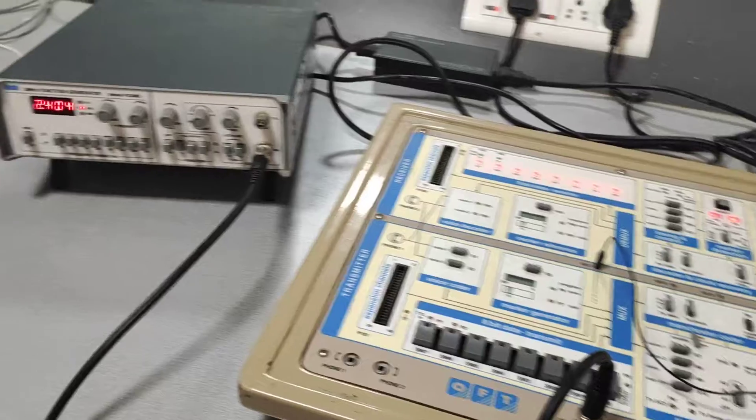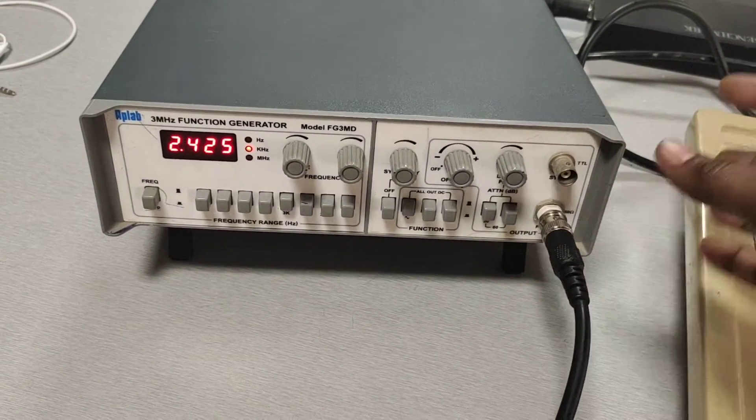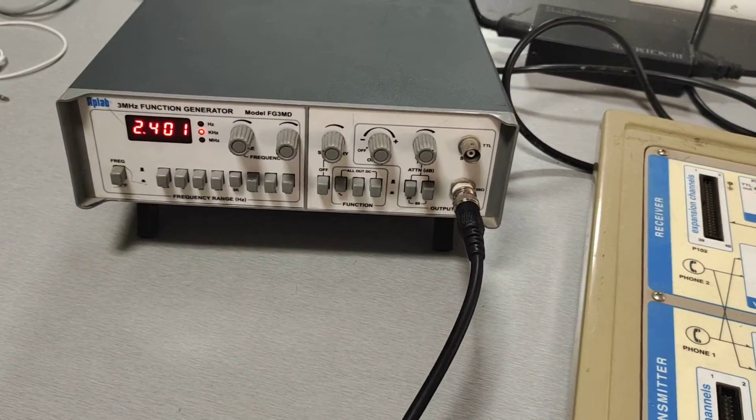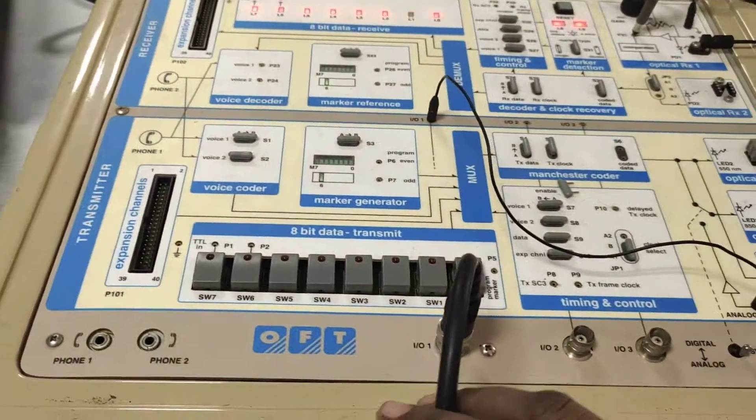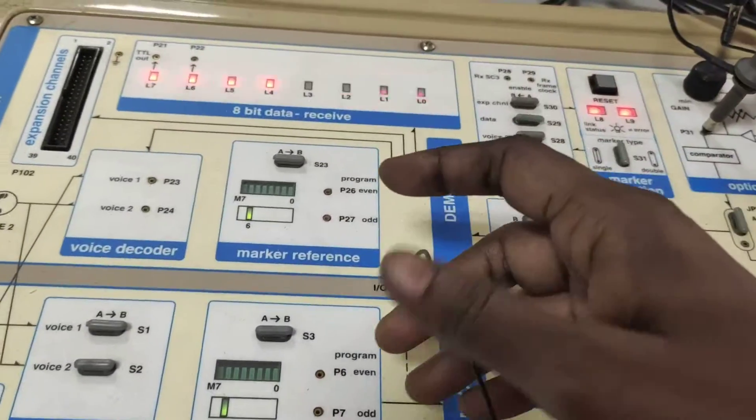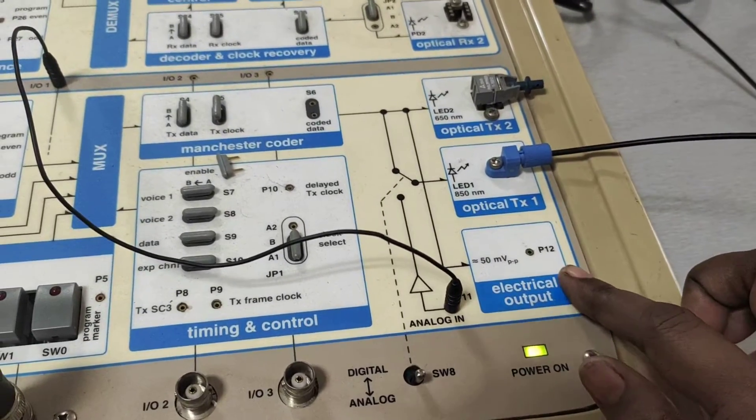What is the first step? Initially, we have to set the input at 2.4 kilohertz with a 2 volt amplitude. A sinusoidal signal is given to the I/O port of the optical fiber trainer kit. Then this IO1 is connected to analog in of optical transmitter 1.